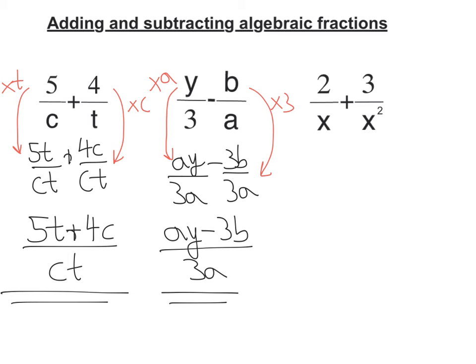I've got 2 over X plus 3 over X squared. Well, the lowest common denominator of X and X squared is actually X squared. Because X squared times 1 is X squared, and X times X is X squared.